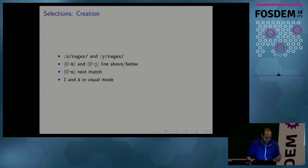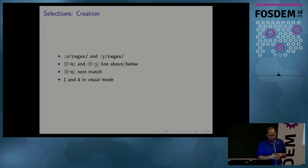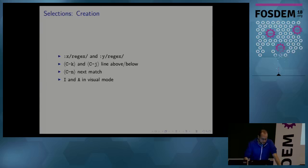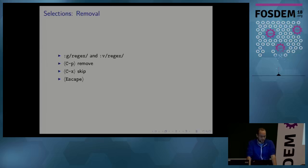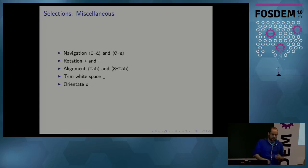Besides these structural regular expression-based commands, we also have some key bindings set up for more traditional-like actions which create selections on neighboring lines, for example. And of course, once we have selections, we can also remove them. Parts of this were shown in the demonstration. And then again, with multiple selections, it allows us to do things like alignment and rotation.